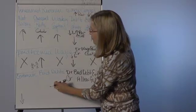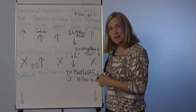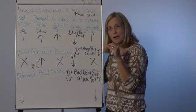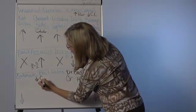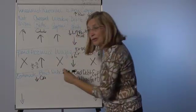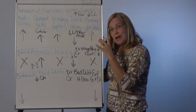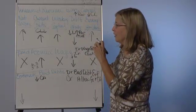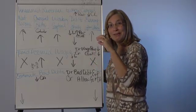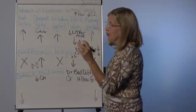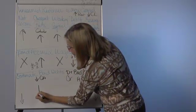Now, if I'm talking about the current ratio, this allowance for doubtful accounts shrinks my current assets. So here, my current assets are getting smaller, aren't they? Because of this allowance. So if my current assets are getting smaller, that means my numerator is getting smaller, which means my current ratio is going to also get smaller.